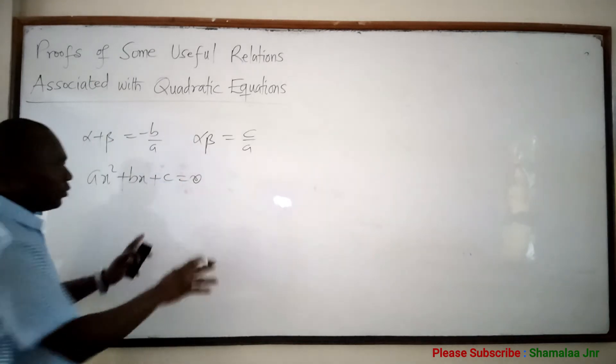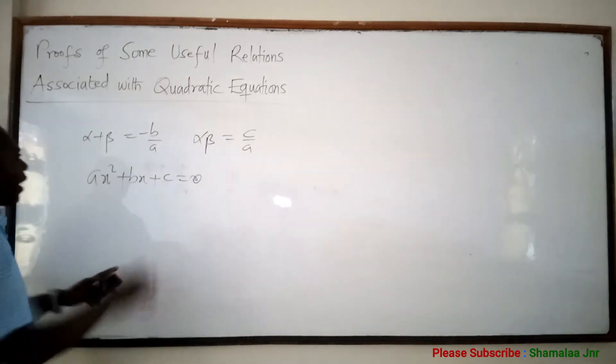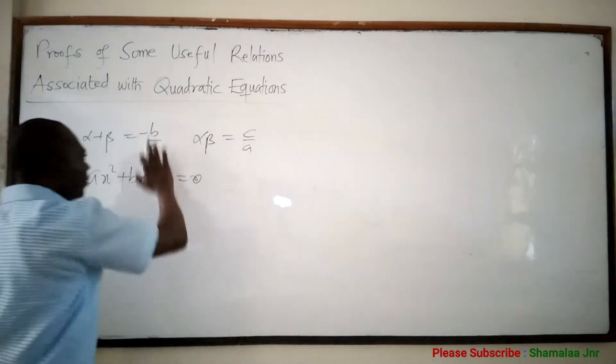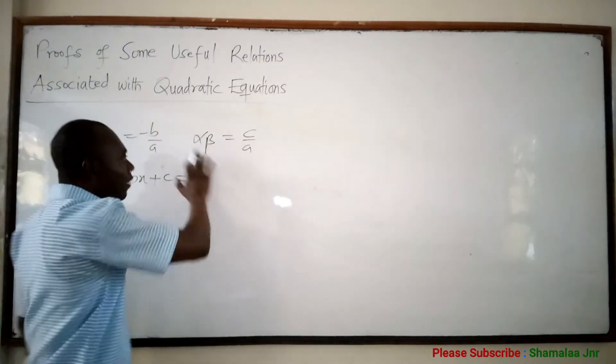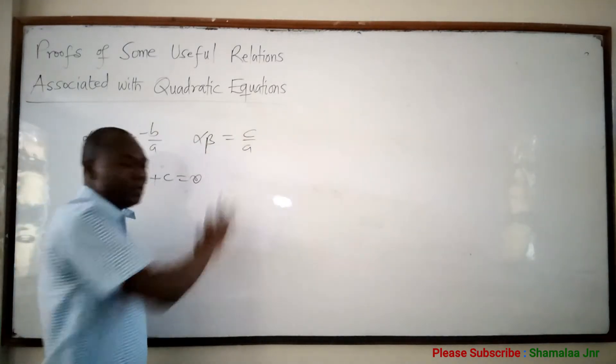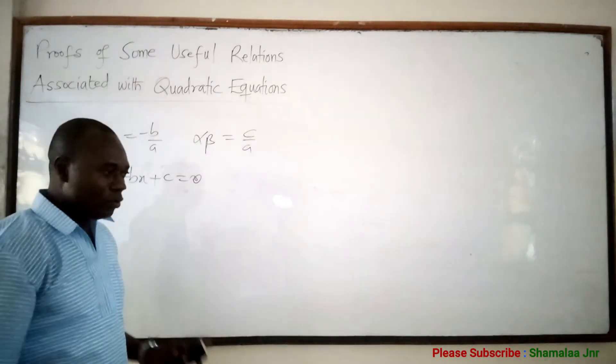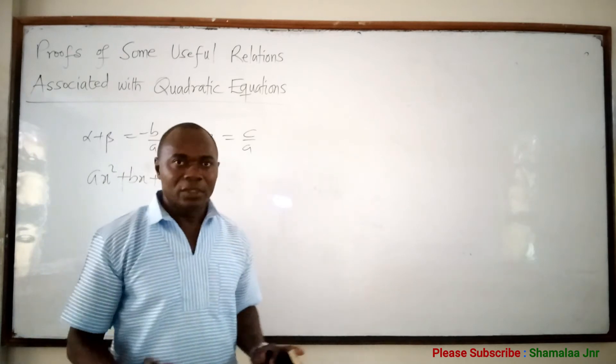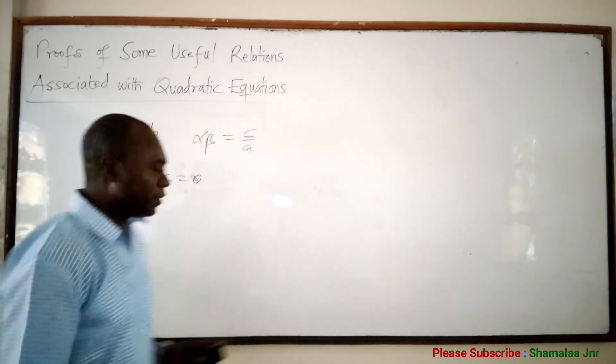Those of you who have watched that video will understand why alpha plus beta is equal to negative B over A and alpha beta is equal to C over A. So those who have not watched it are advised to go and watch it.